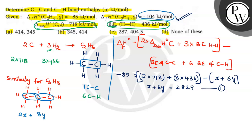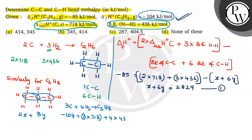For propane, 3 carbons combine with 4 moles of hydrogen to give C3H8. The delta H naught of formation equals minus 104, which is equal to 3 into 718 plus 4 into 436, minus 2X plus 8Y. On solving, we get 2X plus 8Y equals 4002. This is equation 2.